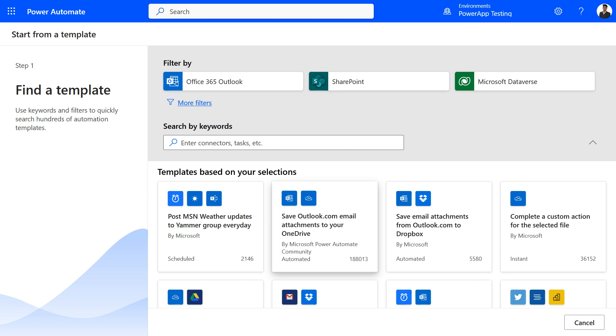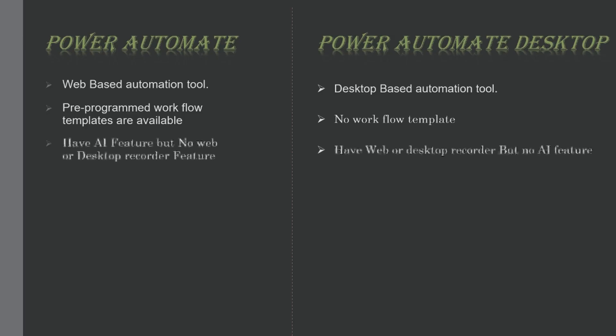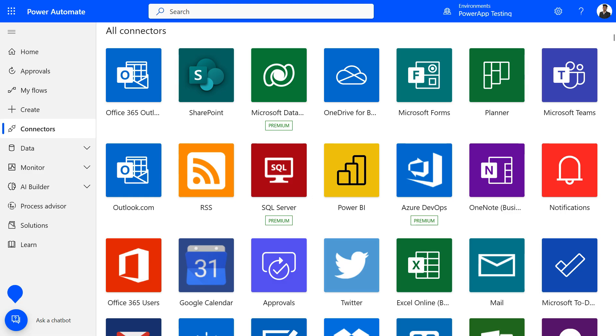Power Automate has AI Builder, through which you can add intelligence to your flow. However, it does not have the feature of web and desktop recording. Power Automate has 450 plus connectors like OneDrive, Excel, and SharePoint.